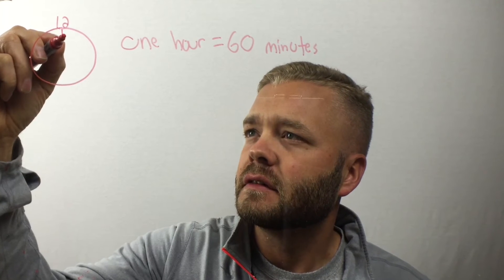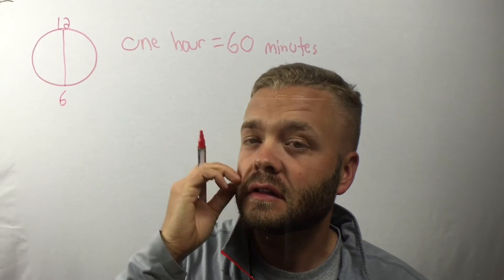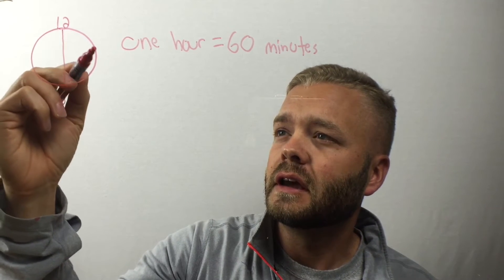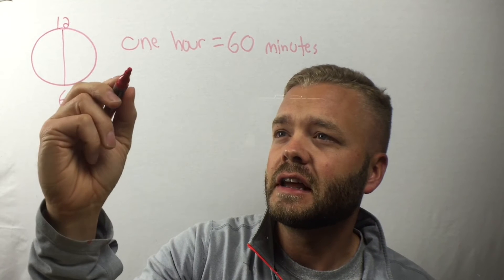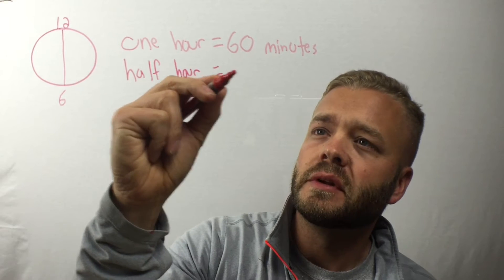Let's cut this clock in half. Here at the bottom is the 6. That's for the 30 minute mark. So if you take an hour and cut it in half, cut 60 in half, a half hour is 30 minutes.